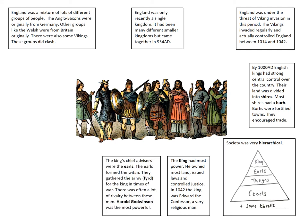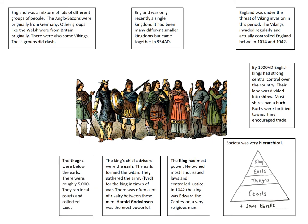Underneath the king were the earls, who were the chief advisors. The earls together formed a sort of parliament called the Witan, and the earls had the power to gather the army — using the Anglo-Saxon word, the fyrd — in times of war. There was a lot of rivalry and hatred between those earls. The most famous was Harold Godwinson, who we will come back to later. Below the earls, the thanes — roughly about 5,000 of them — ran the local courts and collected taxes, making them the local powerful people.